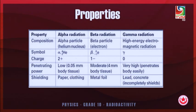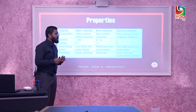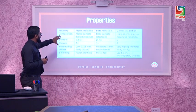To summarize the properties in a table: alpha radiation consists of alpha particles similar to a helium nucleus; beta radiation is a beam of fast-moving electrons; and gamma radiation is high-energy electromagnetic radiation. Regarding charge: alpha has a charge of plus 2, beta has a charge of negative 1, and gamma has no charge.